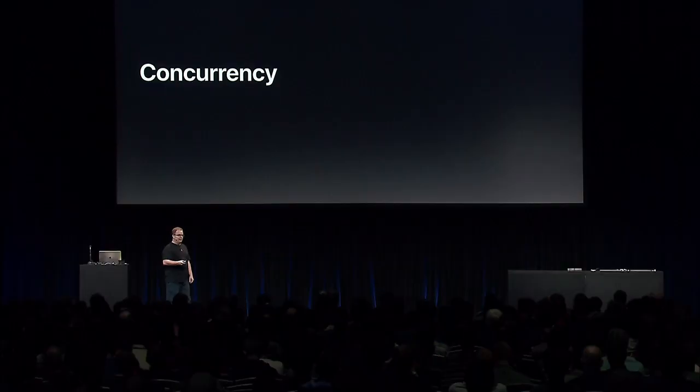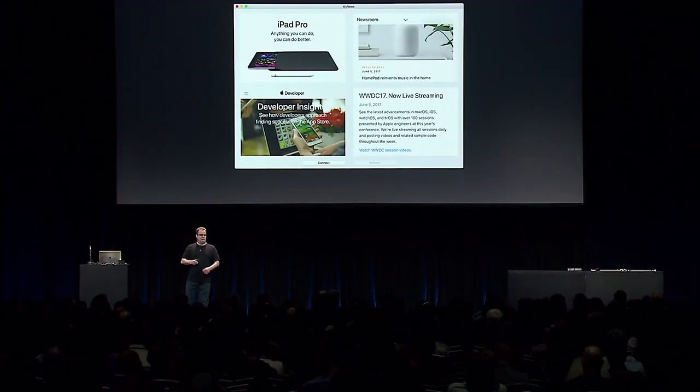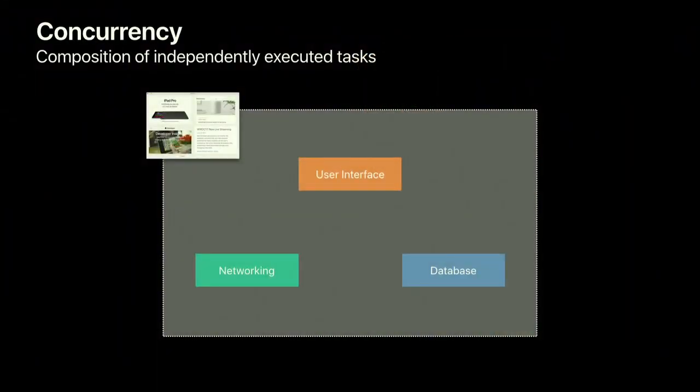Now let's switch to the main topic for today: concurrency. Let's imagine you're writing a simple news app. How would you structure it? You start by breaking it up into independent subsystems. You might have a UI component — the main thread — a database that stores articles, and a networking subsystem that fetches articles from the network.